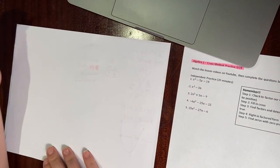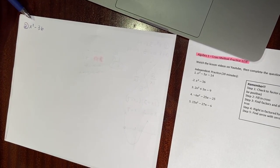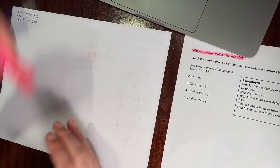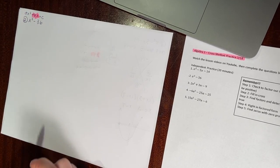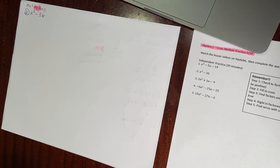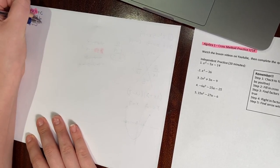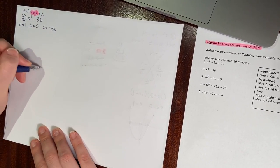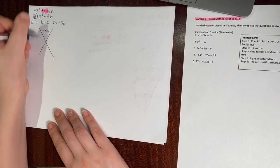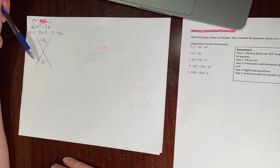Now for question number 2: x squared minus 36. If you watched the videos yesterday, this is the question missing the b value. I'm used to seeing ax squared plus bx plus c, and here I have no x term — no b term. I'll do the same process: check for GCF. My a value is 1, I share nothing between 1 and 36. So I label: a is 1, b is 0 since I have no b term, and c is negative 36. Fill in my cross — a times c is negative 36, and b value is 0.